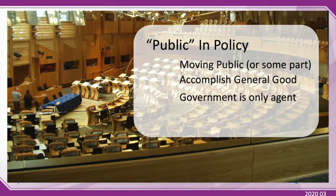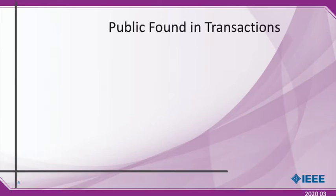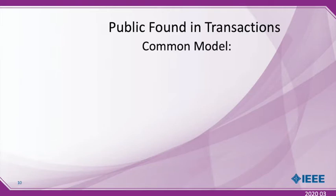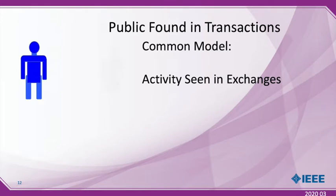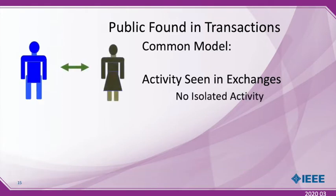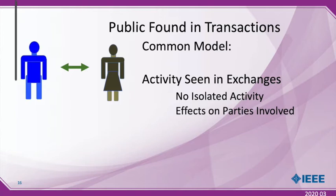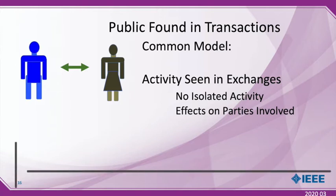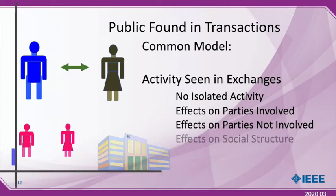Our focus should be on the public. When we talk about the public, rather than making it an abstract group, we want to think of it in terms of transactions. It's a very common model for public policy. All activity of the public is seen in exchanges between two or more parties. There is no isolated activity in this model, or at least none that we care about. We're interested in the effects on parties involved in these transactions, the effects on parties not involved in them, and also on effects in the social structure.